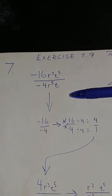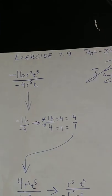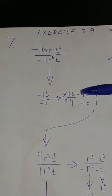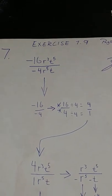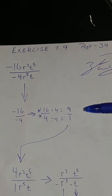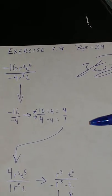In this problem, you want to find your numbers that have like terms. Negative 16 divided by negative 4 is 4.